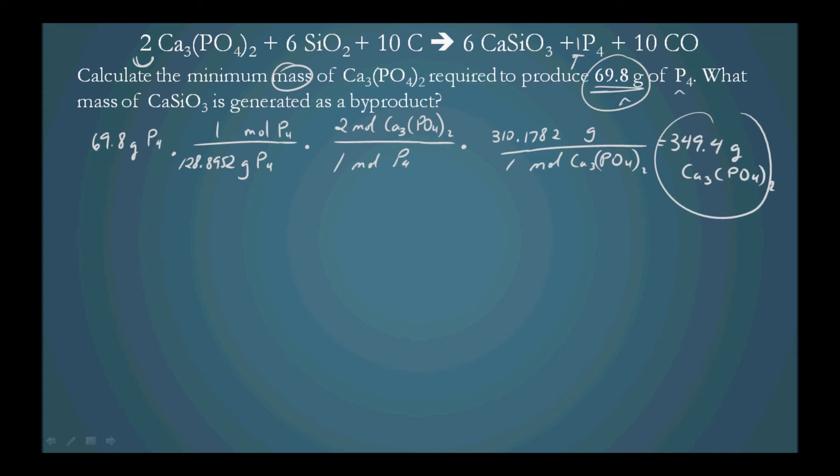So the second part is what mass of CaSiO3 is generated as a byproduct. We'll again begin with 69.8 grams of P4. We'll then again convert it into moles of P4. So 1 mole of P4 is 128.8952 grams of P4, giving moles of P4.